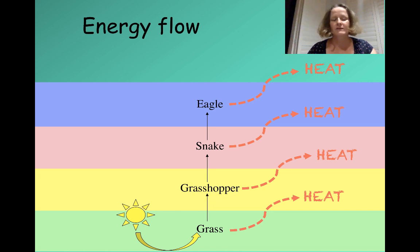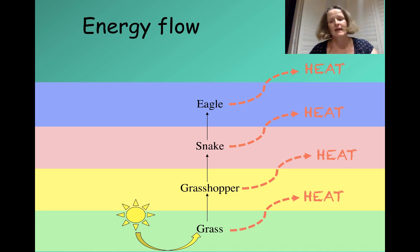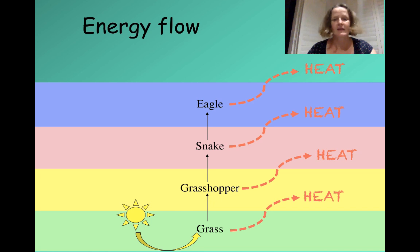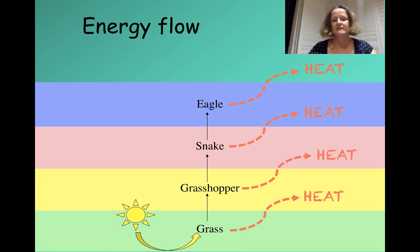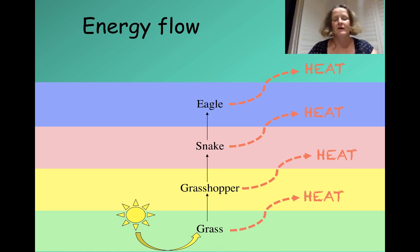Everything that living organisms do is inefficient — whenever you carry out any process, you lose energy in the form of heat. This can explain why food chains can only be a certain number of organisms long, because it's just too inefficient to support very long food chains. You lose too much energy by the time you've gone through five or six different organisms.